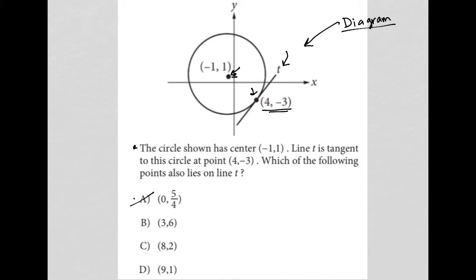Choice B, 3, 6. Well, if this is 4, negative 3, that makes this here — that makes that 4, which means I can say this is 1, 2, and 3. So, this would be 3. And then 6 — if this is 1, 2, 3, 4, 5, 6, it would be here. I'm not exactly sure, but somewhere in that area. So, 3, 6 would be here. At any rate, no chance that 3, 6 is on line T. So, choice B is gone.